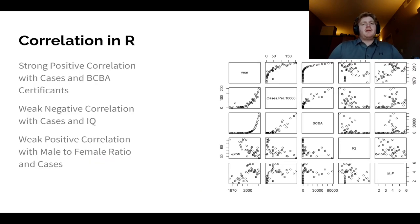So here is some correlation that I did in R. Just taking a look at it, we can see that there is a strong positive correlation with the cases and the BCBA certificates. And then there is also a weak negative correlation with the cases and the IQ scores. And then we also have a weak positive correlation with the male-to-female ratio and the cases.